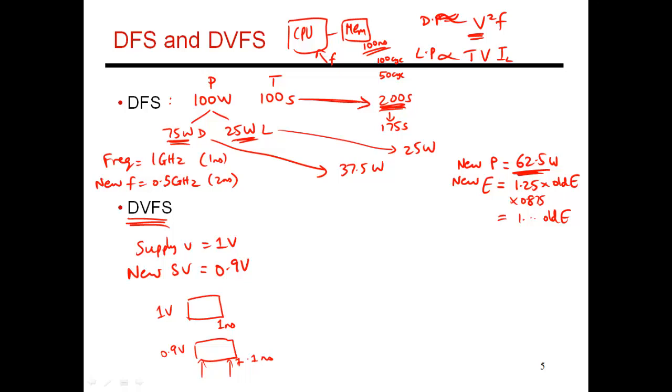So for this circuit to work correctly, the clock edge has to come after 1.1 nanoseconds. So if you change voltage, you have to also change your frequency. If you reduce voltage, you have to increase your cycle time, which means you have to reduce your frequency as well.